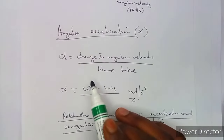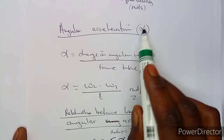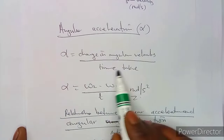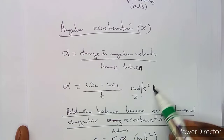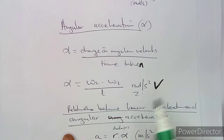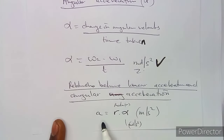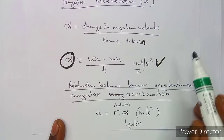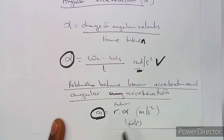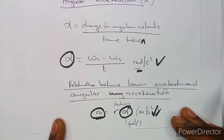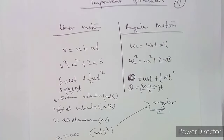Angular acceleration α is the change in angular velocity over the time taken. The relationship between angular acceleration α and linear acceleration a is: a = rα. Alpha is for angular acceleration measured in rad/s², while a is for linear acceleration measured in m/s². These formulas are also in your formula sheet.